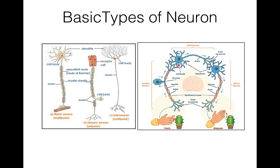The second type is the interneuron. It has a short dendrite and short axon. Interneurons interconnect sensory neurons with motor neurons — that is why they are called interneurons. They are present entirely within the central nervous system, and they are multipolar in structure.